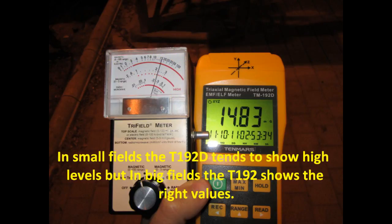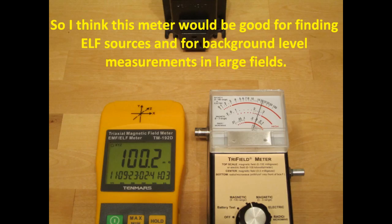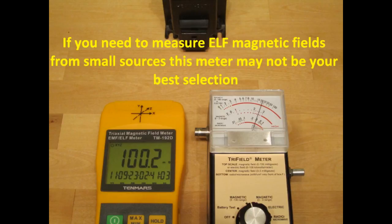In small fields, the meter tends to show high levels, but in big fields, the T192 shows the right values. So I think this meter would be good for finding extreme low-frequency magnetic sources and for background level measurement in large fields. If you need to measure extreme low-frequency magnetic fields from small sources, this meter may not be your best selection.